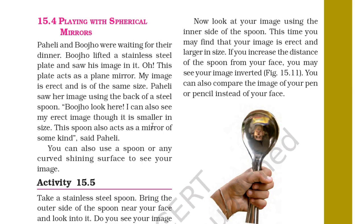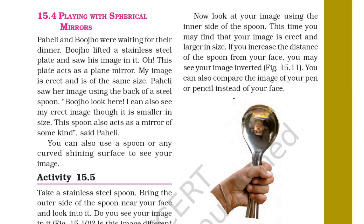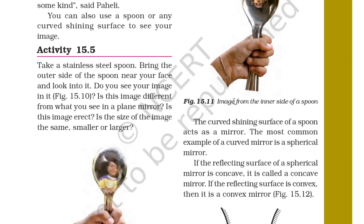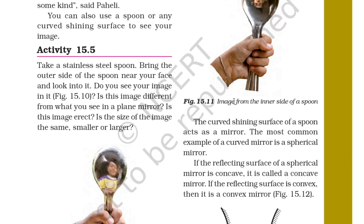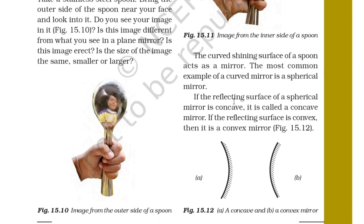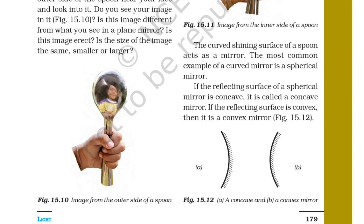The curved shining surface of a spoon acts as a mirror. The most common example of a curved mirror is a spherical mirror. If the reflecting surface of the spherical mirror is concave, it is called a concave mirror. If the reflecting surface is convex, it is called a convex mirror. You can see in figure A it is concave, and in figure B it is convex.